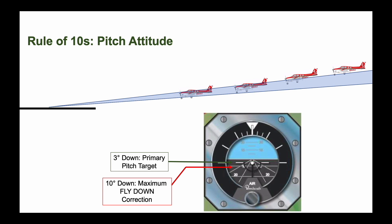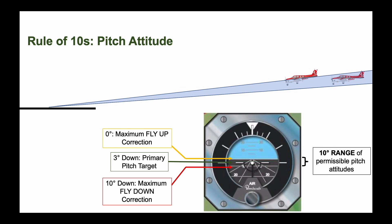10 degrees nose down is also a maximum pitch down if you are intercepting a glide slope or glide path from above. We have a range of 10 degrees of permissible pitch attitudes then, a rule of 10s, from the time we pass the final approach fix to when we break out for a visual landing.